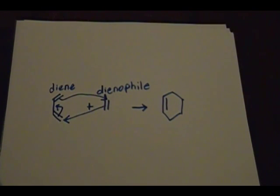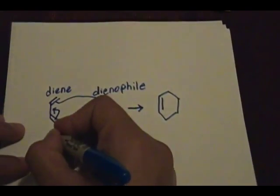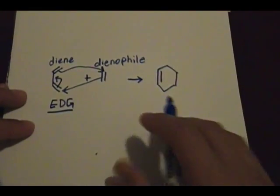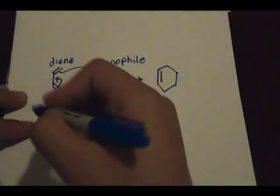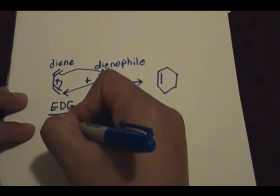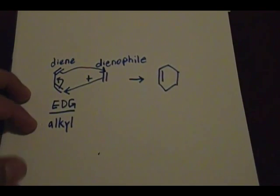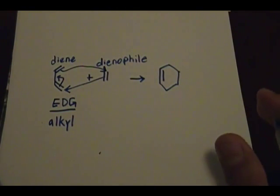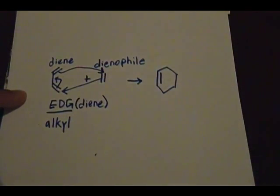Keep that in mind. The next thing to discuss is electron donating groups and electron withdrawing groups. Electron donating groups, abbreviated EDG, include alkyl groups — any type of alkyl group like propyl, methyl, or isopropyl. Any variation of an alkyl group is an electron donating group. These substituents are found only on the diene, and they are what make the diene more reactive.